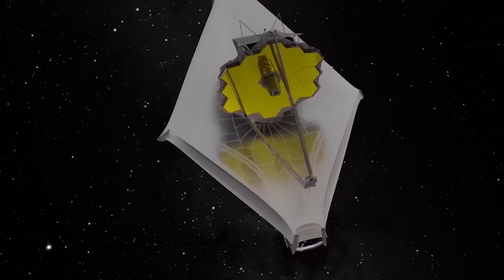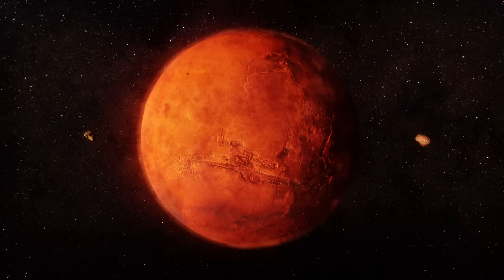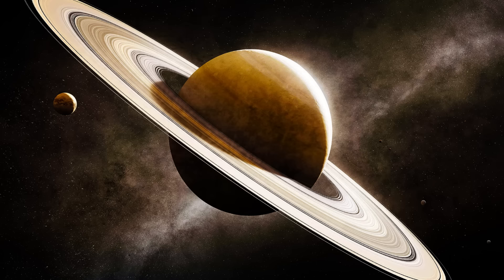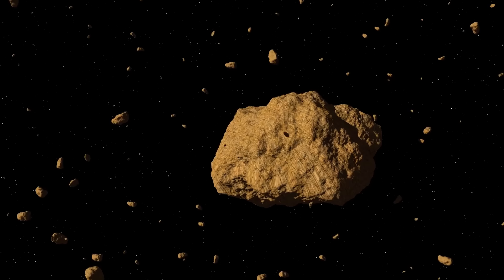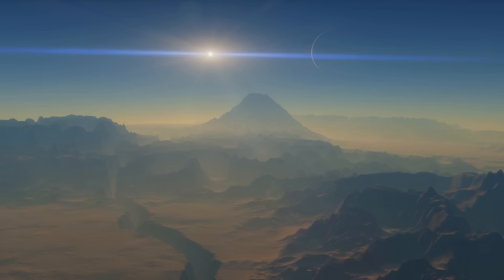Webb can look at things in our solar system, like Mars, Jupiter, Saturn, Uranus, Neptune, Pluto, their moons, and even comets and asteroids. It can also see objects beyond Mars, like those in the Kuiper Belt.